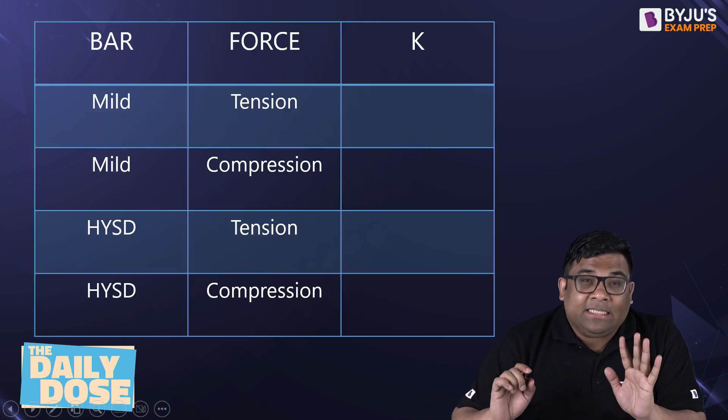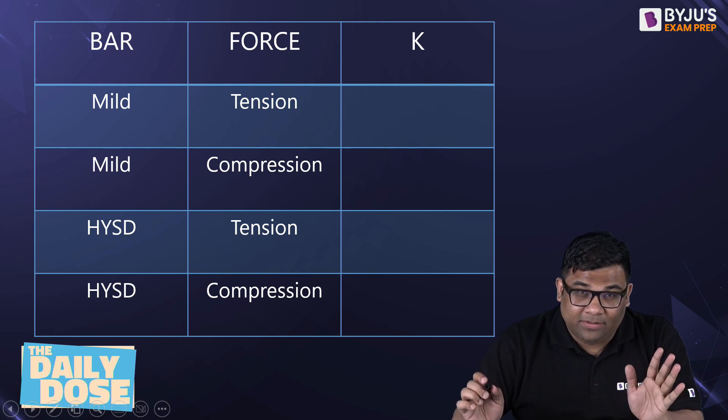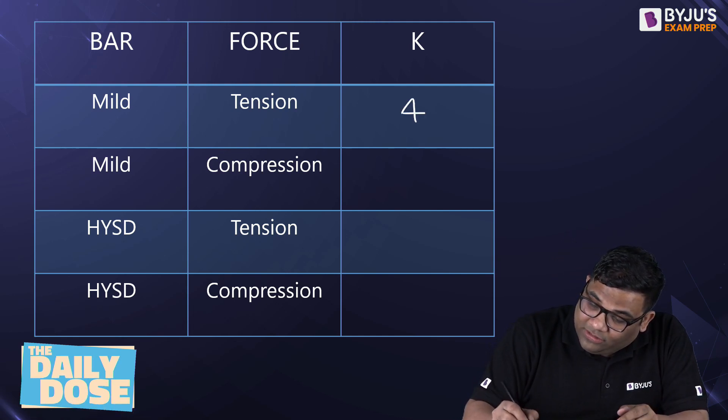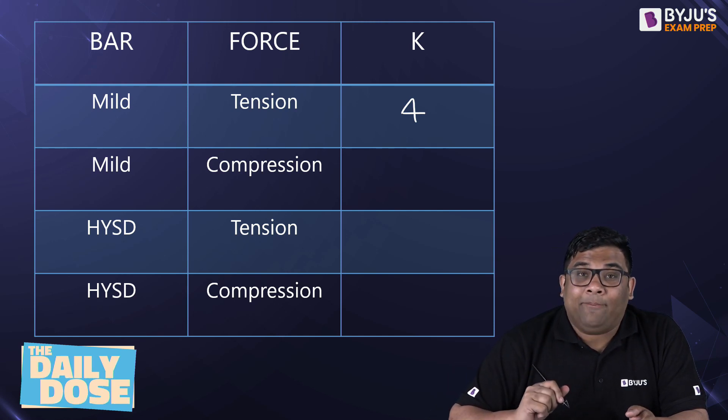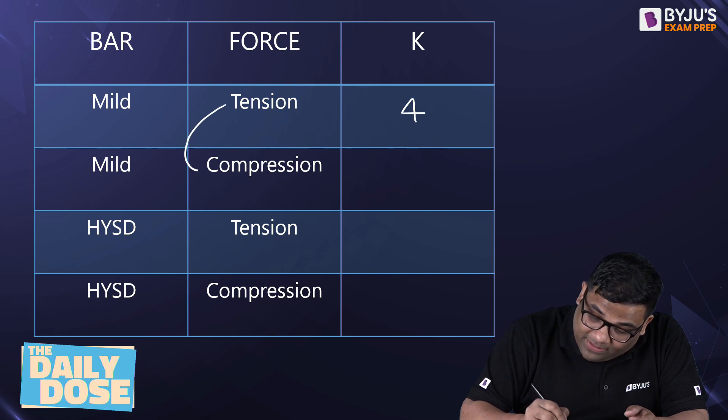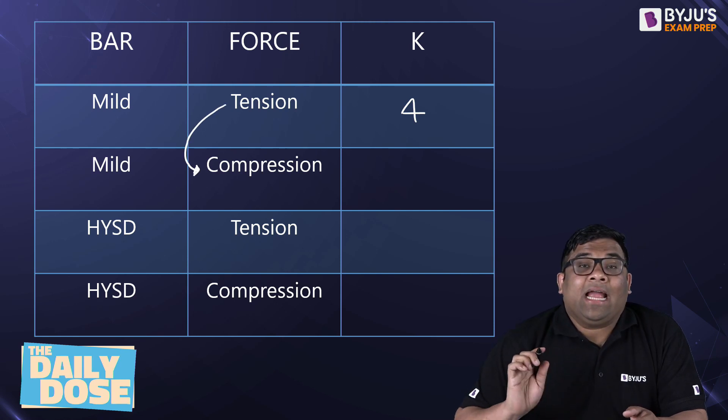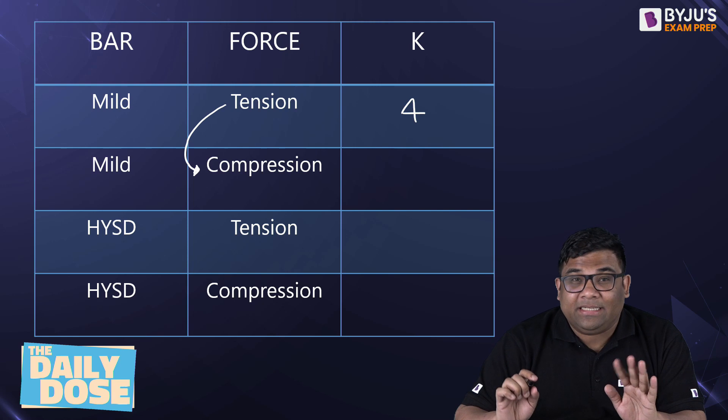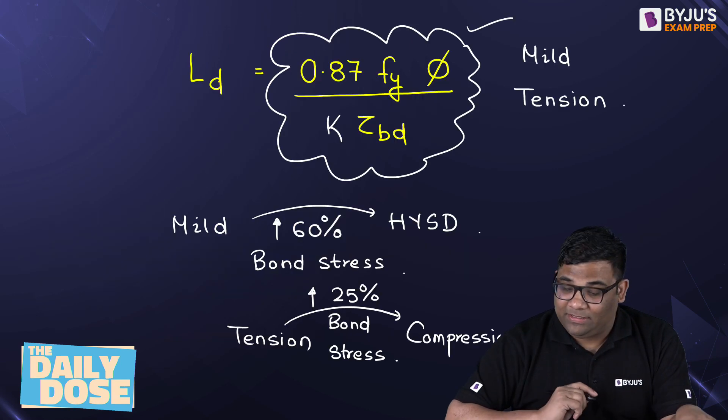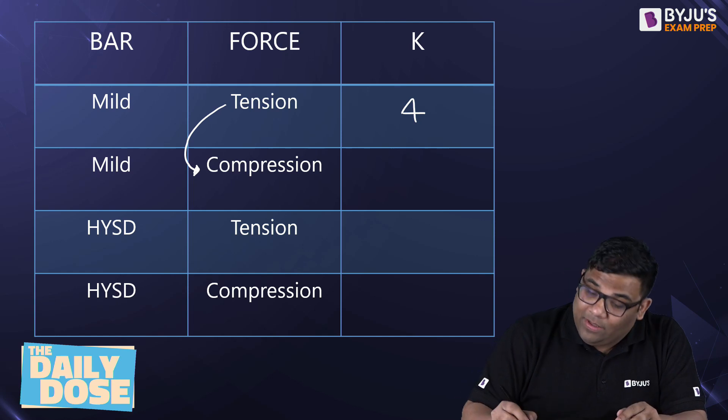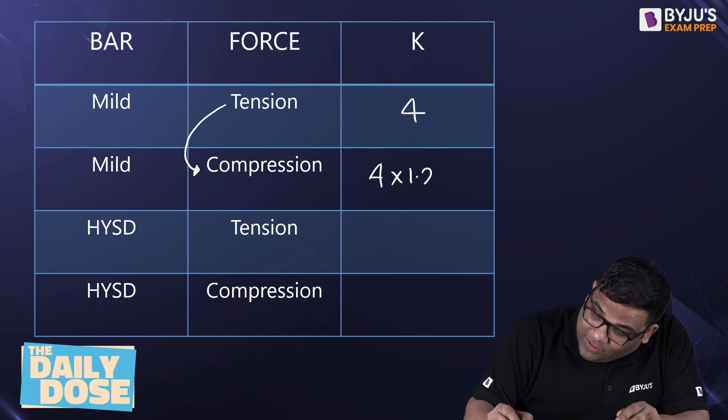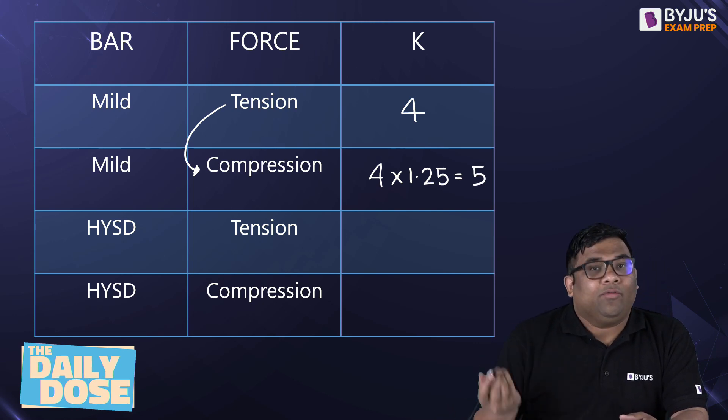So if it is mild steel and tension, the force is tension, then the K will remain the original one. That is how much? 4. Now what happens when it remains mild but the force changes from tension to compression? Then I have to increase by how much percent? 25%, right? From tension to compression, 25%. So what I will do? With this 4, I will multiply 1.25, I get how much? 5. So I will use now K is equal to 5.